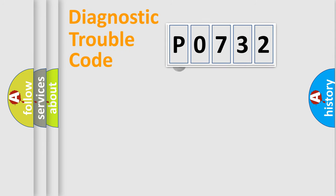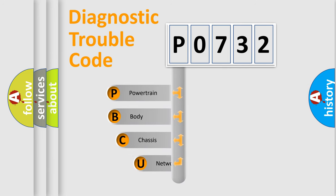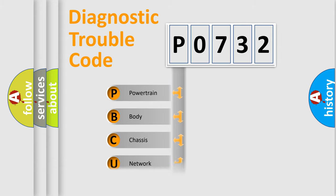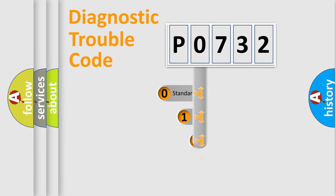First, let's look at the history of diagnostic fault code composition according to the OBD2 protocol. We divide the electric system of an automobile into four basic units: powertrain, body, chassis, and network. This distribution is defined in the first character of the code.